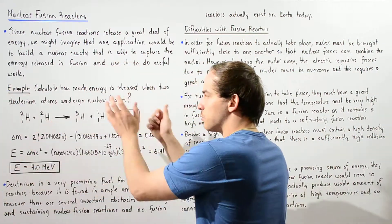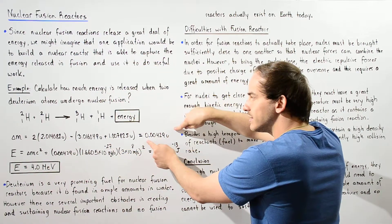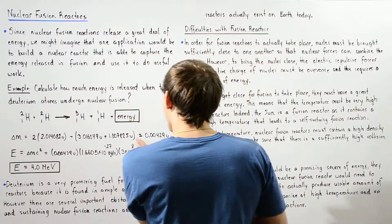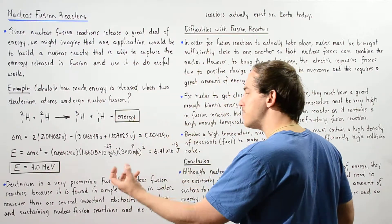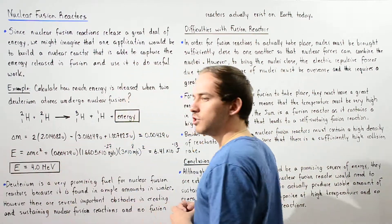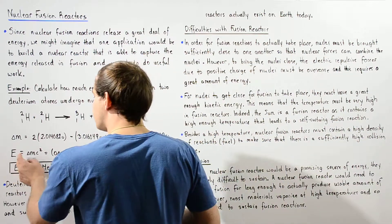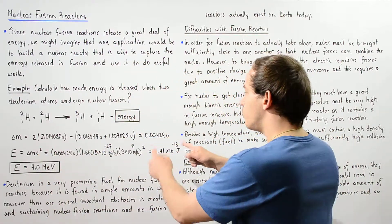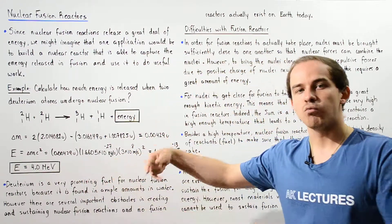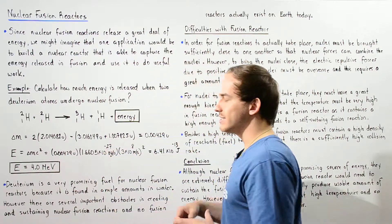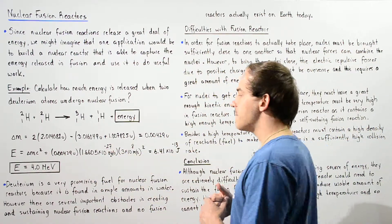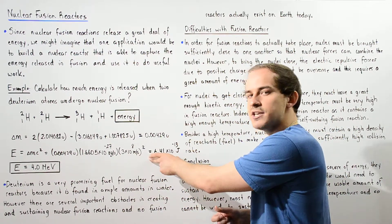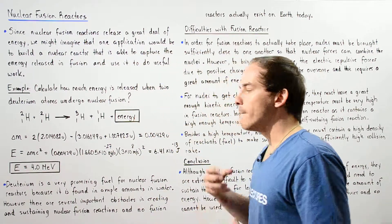As we go from reactants to products, there is a decrease in mass, so energy must be released — some of that mass is transformed into energy. To calculate the corresponding energy, we use the rest mass energy equation: E equals delta-M in kilograms multiplied by the speed of light squared. We apply the conversion factor of 1.6605 × 10⁻²⁷ kilograms per unified atomic mass unit, multiply by c², and we get the energy in joules.